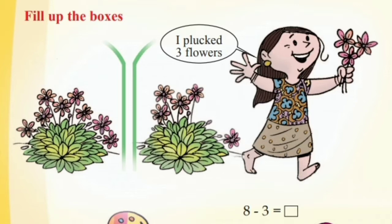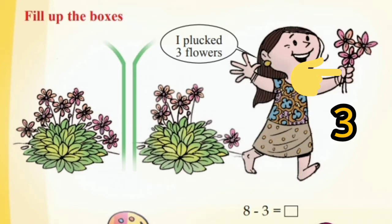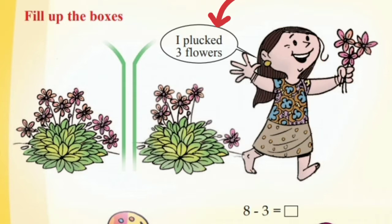Do you see Lada? Yes, what did she do? Yes, she plucked the flowers. How many flowers are on her hand? Yes, there are three flowers. Lada said, I plucked three flowers.